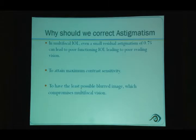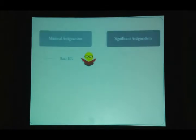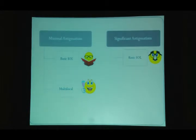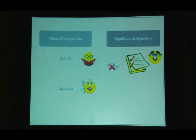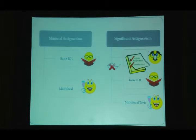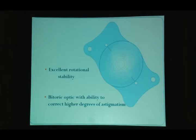With minimal astigmatism and a basic IOL the patient is happy using only reading glasses. With significant astigmatism and a standard monofocal, the patient needs glasses for both distance and near. With a toric IOL they only need reading glasses. With a toric multifocal, the patient achieves spectacle independence for most activities — the happiest outcome. For toric multifocals, excellent rotational stability is essential. The Zeiss four-haptic design provides excellent stability and also has a bi-toric design — toricity divided on the anterior and posterior surface — allowing up to 12 diopters of cylindrical power correction.